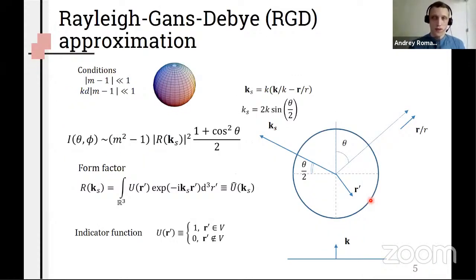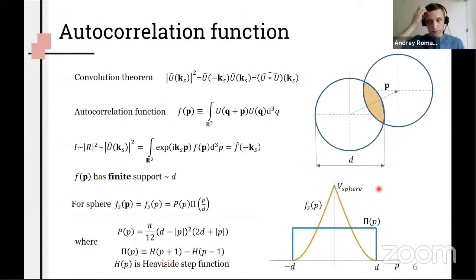We're going to start with the RGD approximation. In here, unpolarized intensity is proportional to this expression where form factor determines the form of light scattering pattern and here it is a Fourier transform of the particle's indicator function. Also we work with the ks vector, the light scattering vector, instead of regular scattering vector.